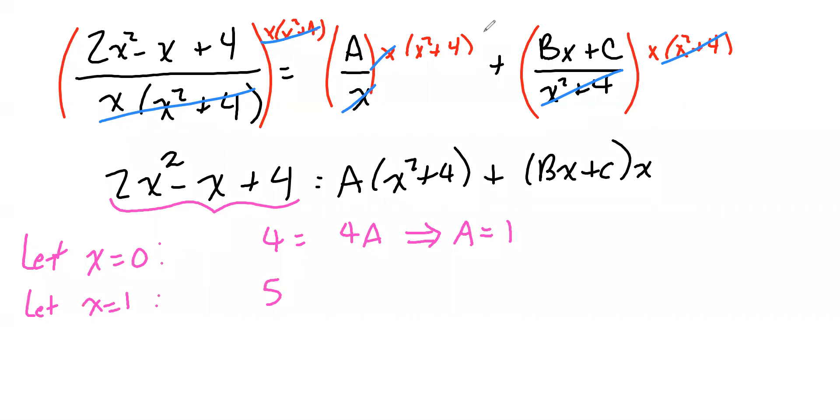And if we let x equal to 1 here, we get 1² + 4 is 5. 5 times A is 5A. But what do we get if we let x equal to 1 over here? We get b + c times 1, which is b + c.